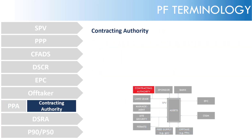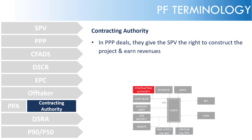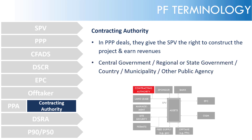Contracting authority. In PPP deals, the contracting authority gives the SPV the right to construct the project and earn the revenues. The term contracting authority could mean any of the central government, a regional or state government, a county, a municipality, or any other public agency.